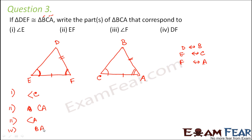To answer these kinds of questions, the first tip is to draw the triangles as per the correspondence of the vertices. For example, since triangle BEF is congruent to triangle BCA, name the triangle so that B corresponds to B, C corresponds to E, and A corresponds to F.